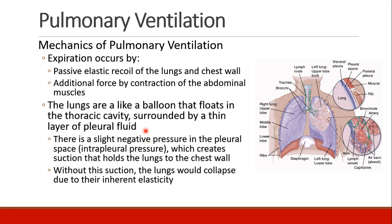Expiration is mostly passive. You just stop contracting your muscles of inspiration, and the passive elastic recoil of the lungs and the chest wall will push the air out. If people want to forcefully expire — like when you blow out or when you speak — the abdominal muscles are the primary muscles of expiration.